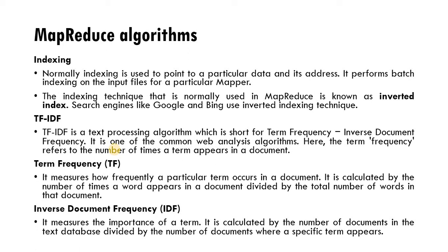Inverse document frequency is calculated as the number of documents in the text database divided by the number of documents where a specific term appears. For example, if there are 50 documents in our database and the specific term appears in 70 instances across those 50 documents, then 50 divided by 70 gives the inverse document frequency. That is how the inverse document frequency is calculated.